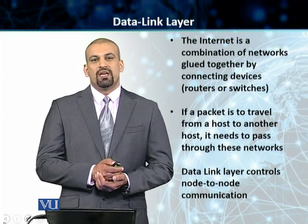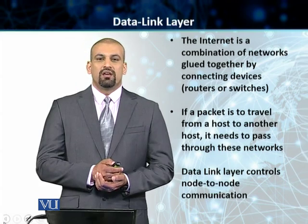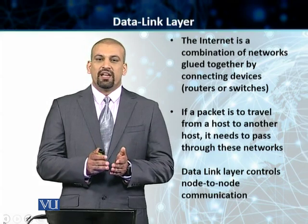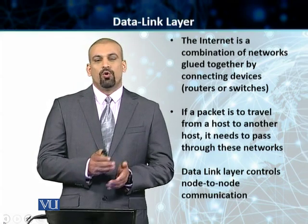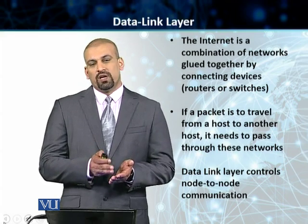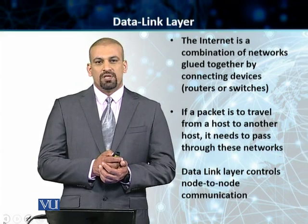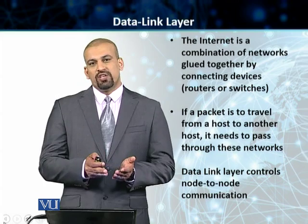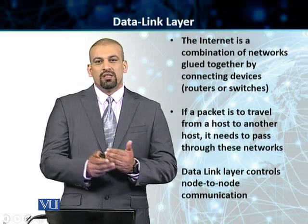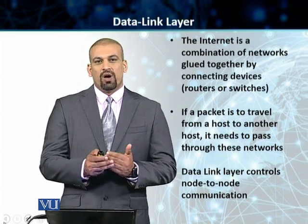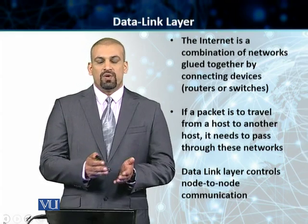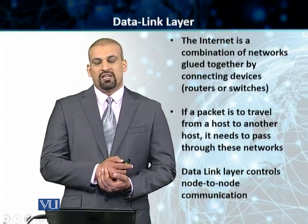Some of them can be local area networks and the others will be wide area networks. The scope of the data link layer is to control the node-to-node communication. The IP layer communication, or the network layer — layer 3 communication — is what happens when you have a source IP address and a destination IP address. But there are multiple links and multiple nodes in between the source and the destination that require the data link layer to control this communication using the addressing at this layer.